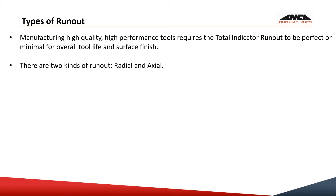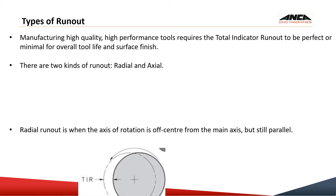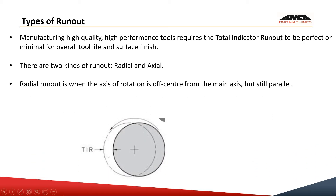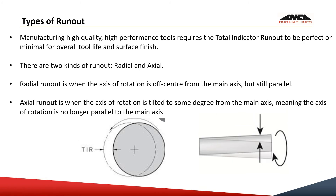There are two kinds of runout: radial and axial. Radial runout is when the tool is running on the same axis but is radially offset. Axial runout is when the tool is not running at the centerline of the headstock axis — it has a wobbly effect.